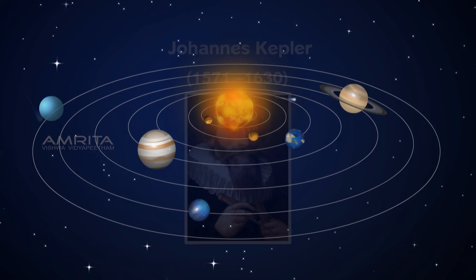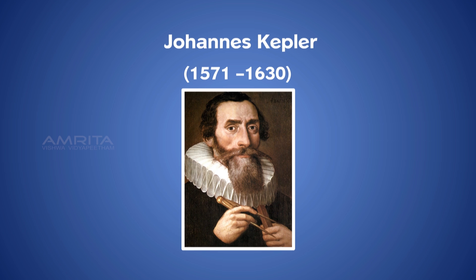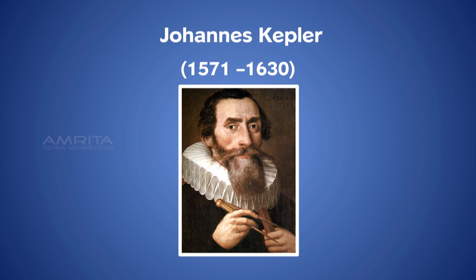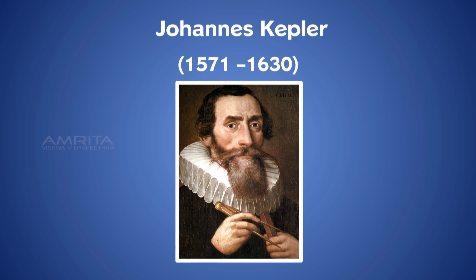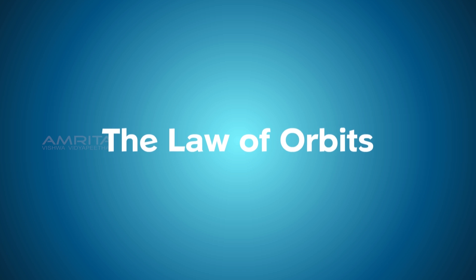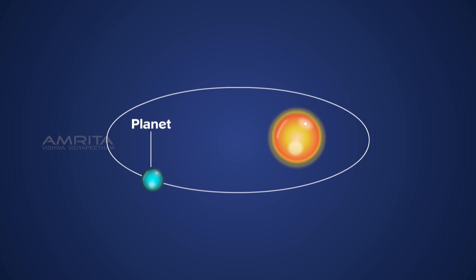During the 17th century, Johannes Kepler proposed three laws that describe the motion of planets. The first one is the law of orbits. All planets move in elliptical orbits having the sun at one focus.